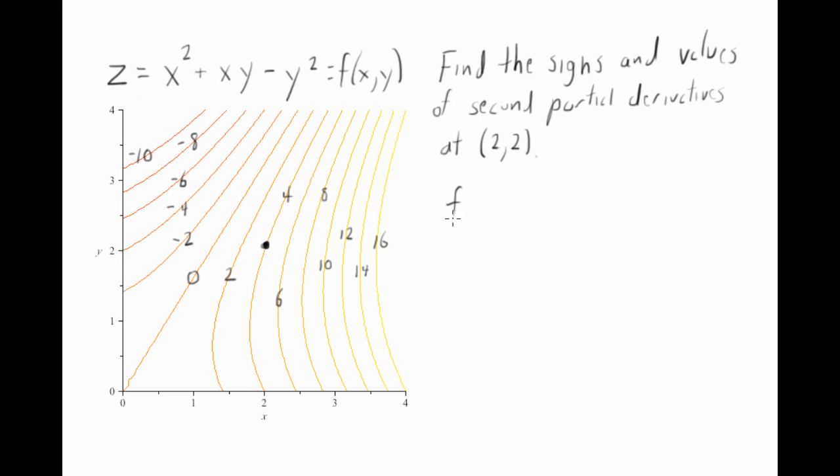Let's think about f sub x sub x. What's going on here? Well, f sub x without the second x just means what's our slope in the x direction? But this is then asking, what happens to our slope in the x direction as we move in the x direction?